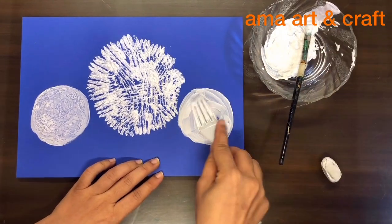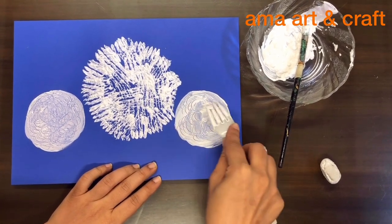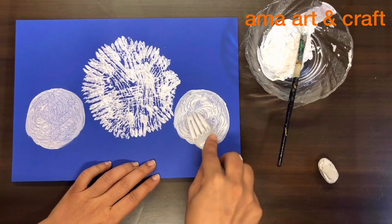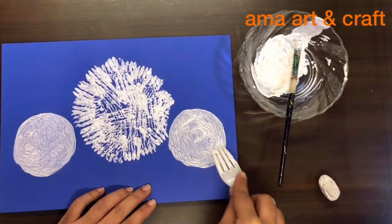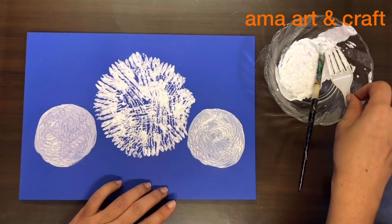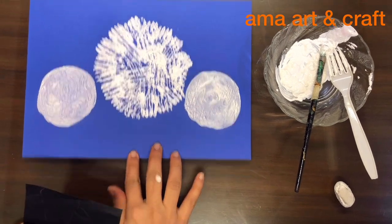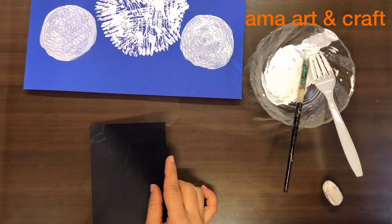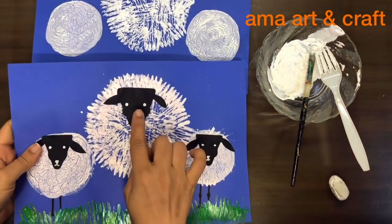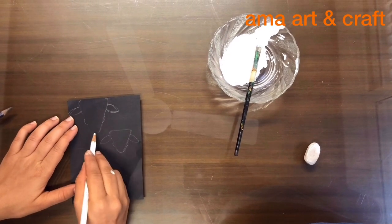Take a look at the sides. Now we will take one black paper for the face. Now we will make the face.